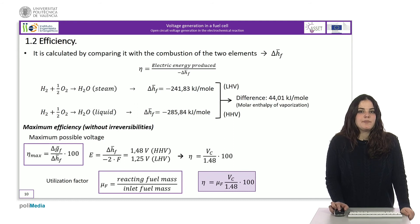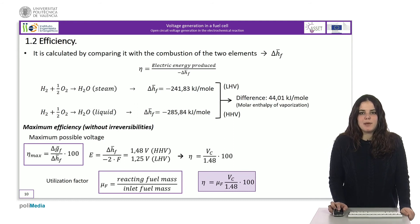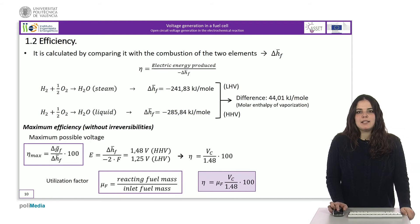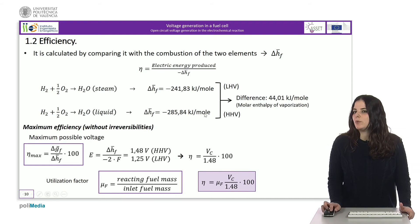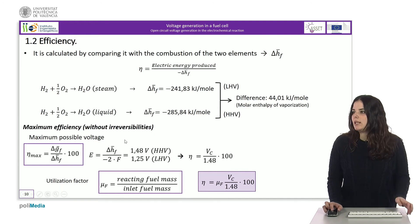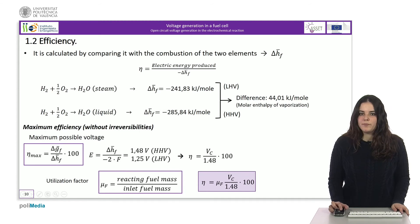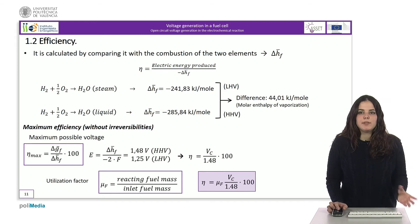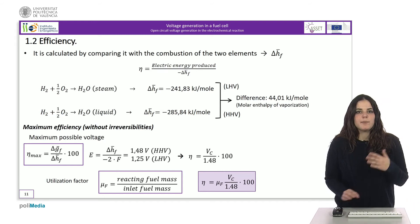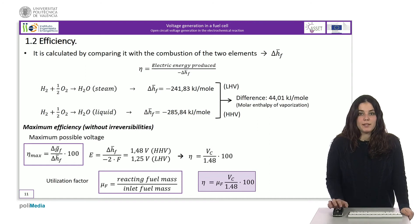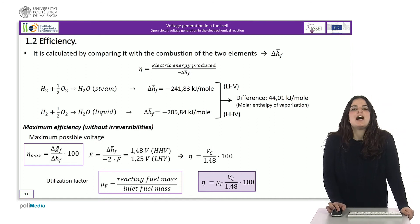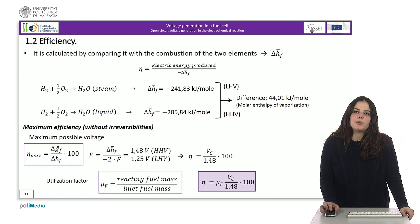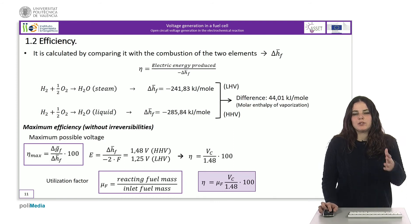As electrical energy is produced by Gibbs free energy, the maximum efficiency value that can be obtained is the ratio between the two magnitudes, as shown in this equation. However, we will see later that the voltage generated by the fuel cell is not the reversible voltage, but that certain irreversibilities are produced which make the generated voltage decrease. For this reason, it can be useful to obtain an expression of efficiency that contemplates voltage values.